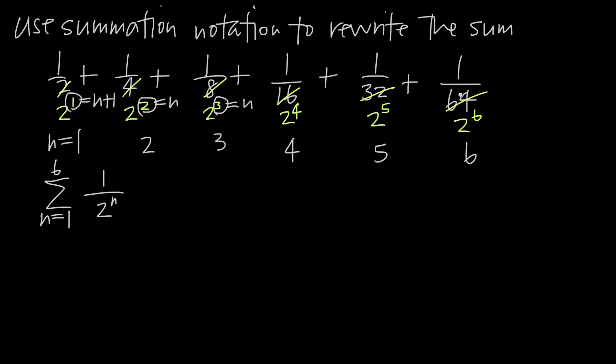And if we want to double-check ourselves, all we have to do is plug this back in. So here, we start at n equals 1, and we know we're going to go up to 6. But if we plug in n equals 1 first, what we're going to get is 1 over 2 to the first power, or 1 over 2. If we then start counting up and we say n equals 2, we plug in n equals 2, we're going to get 1 over 2 squared, or 1 fourth.